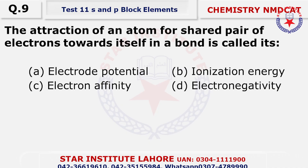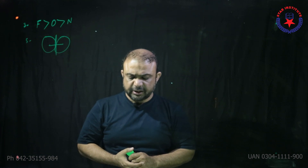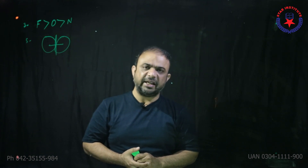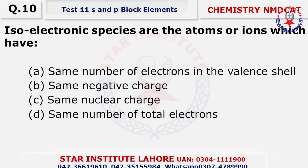Question number 9: The attraction of an atom for the shared pair of electrons towards itself in a bond is called — it is simply the definition of electronegativity. Question number 10.